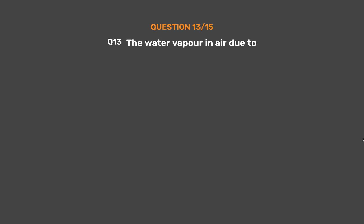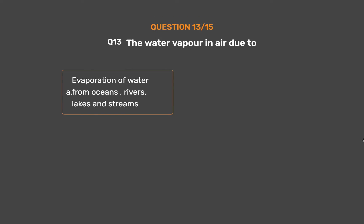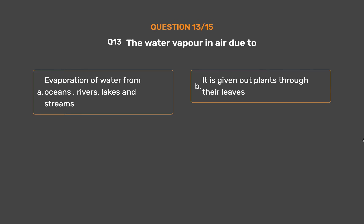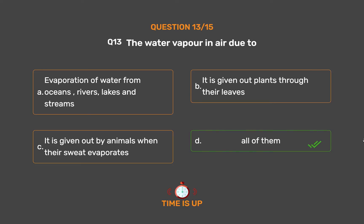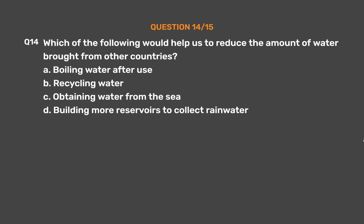Question number thirteen: The water vapor in air is due to — option A: evaporation of water from oceans, rivers, lakes and streams, option B: it is given out by plants through their leaves, option C: it is given out by animals when their sweat evaporates, option D: all of them. The correct answer is option D: all of them.